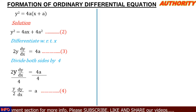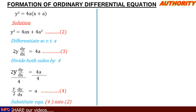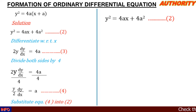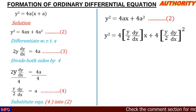We substitute this value of a into equation 2. In equation 2 we have y² = 4ax + 4a². Wherever we see a, we replace it with (y/2)(dy/dx). That gives us y² = 4·(y/2·dy/dx)·x + 4·(y/2·dy/dx)².